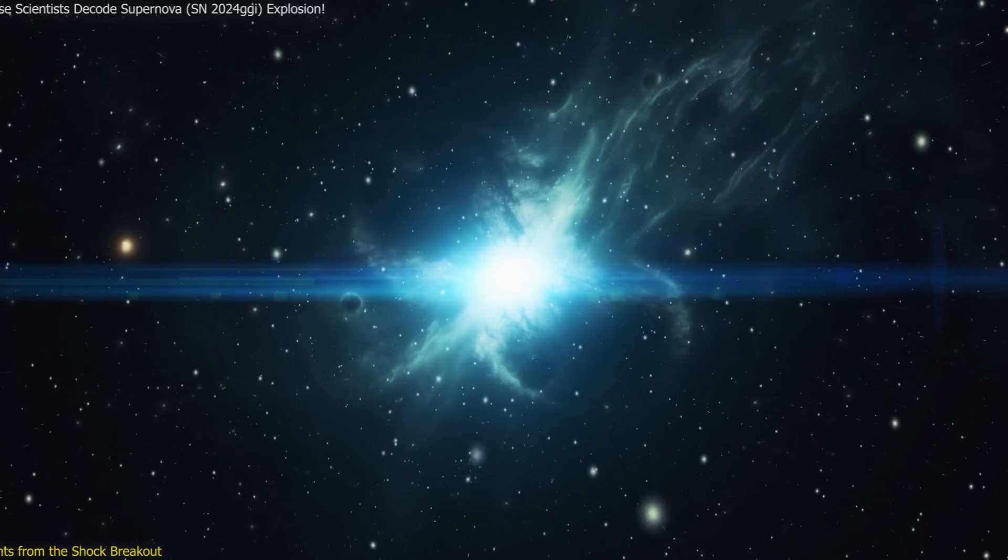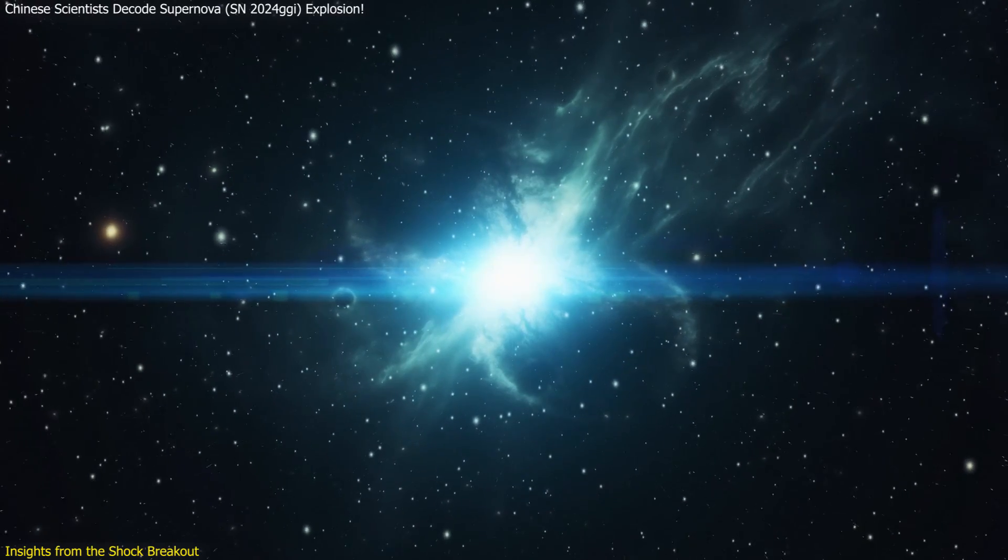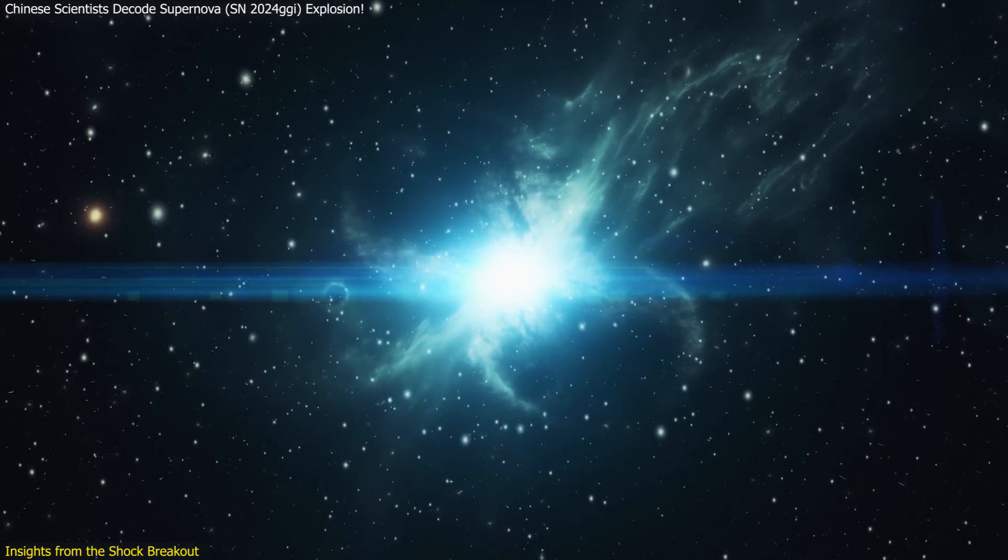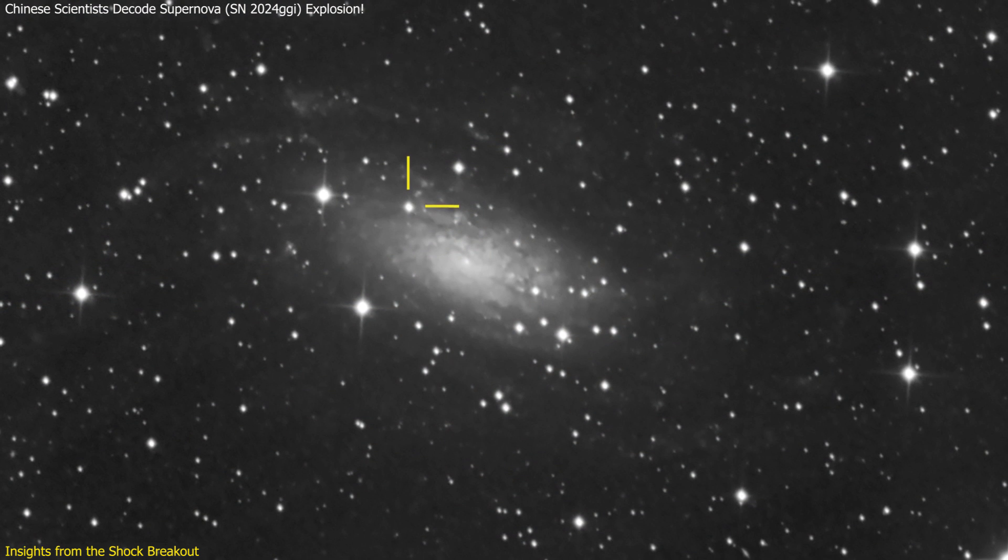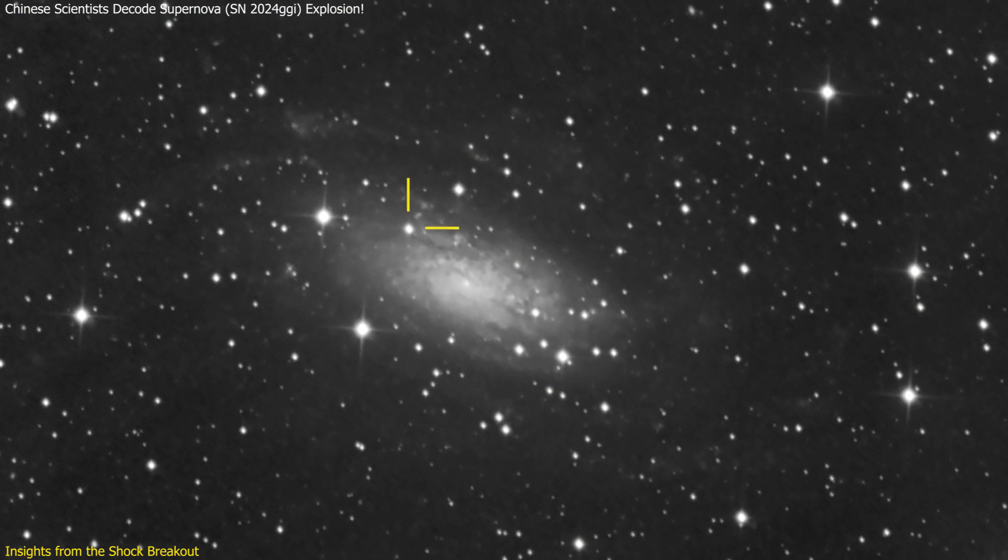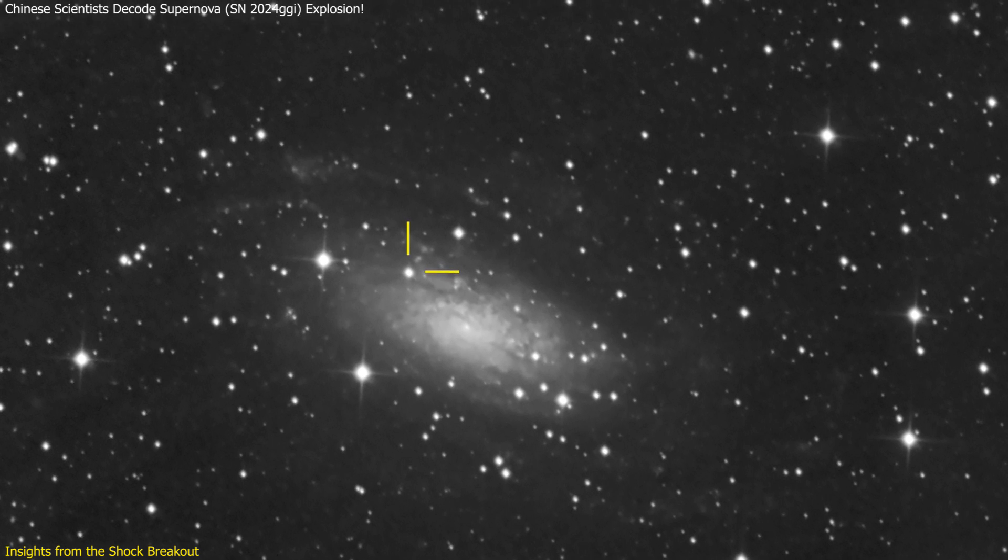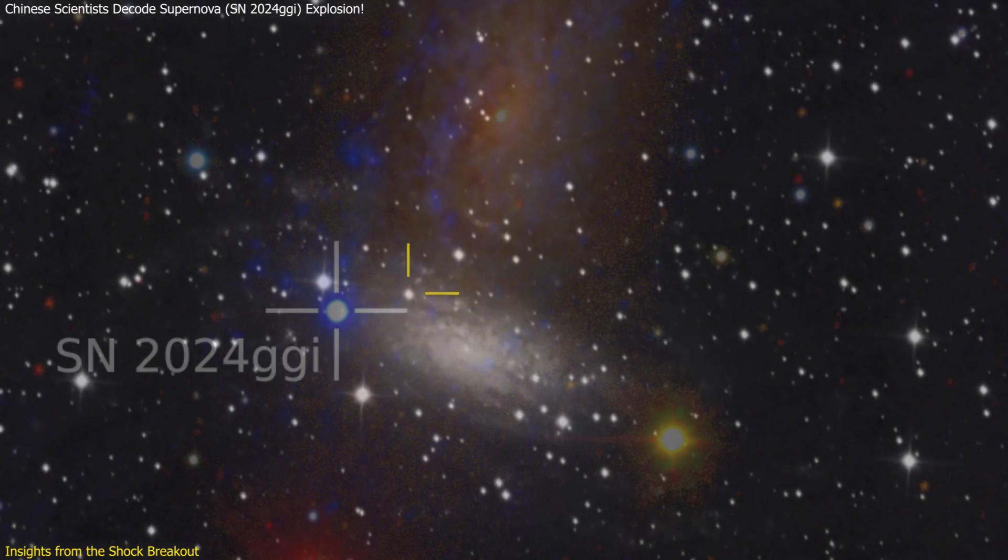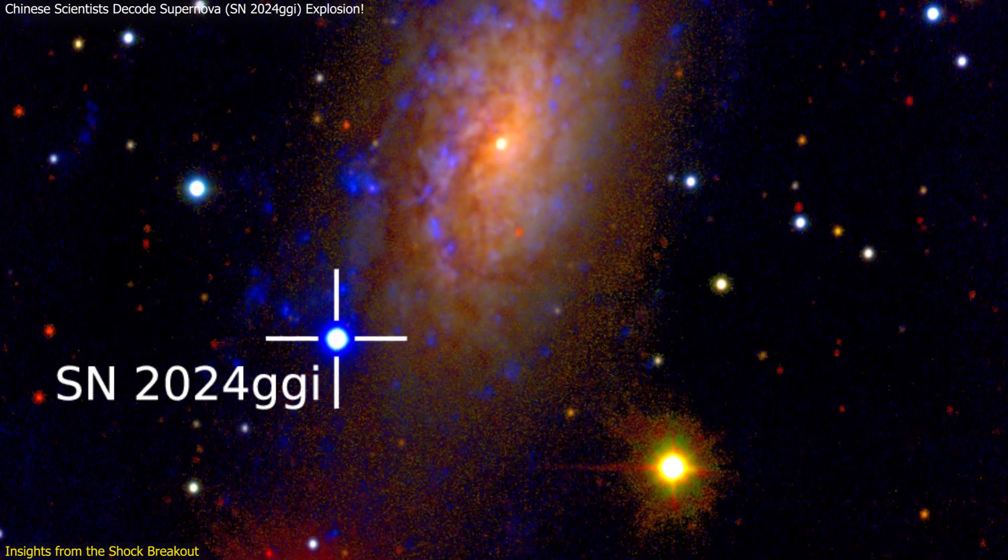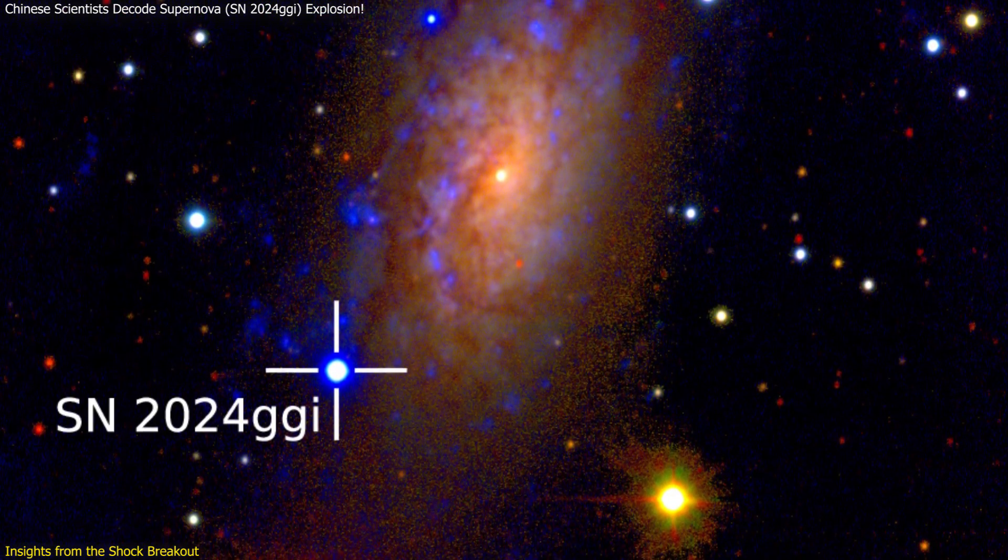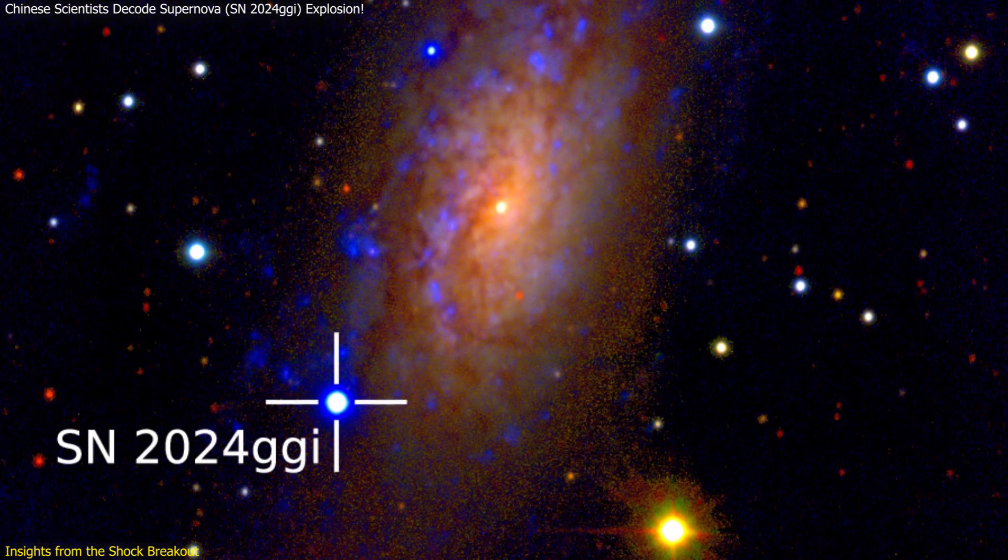The shock breakout of a supernova provides a unique glimpse into the extreme physics of stellar death. When SN 2024 GGI's shock wave broke through the dense circumstellar material, it produced the earliest detectable electromagnetic radiation from the explosion. This moment, captured in exquisite detail, is a key piece of the puzzle in understanding supernova dynamics.